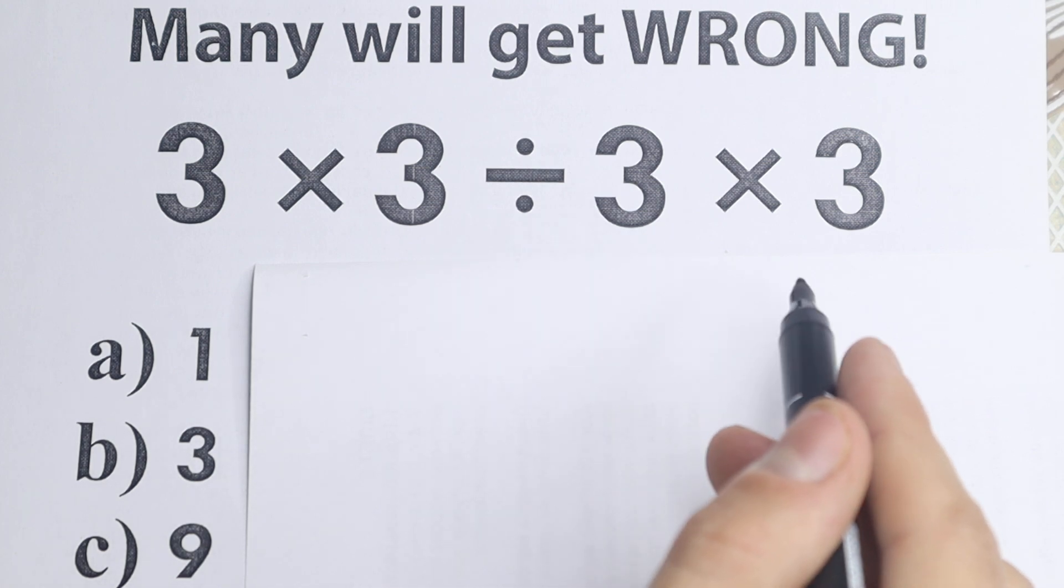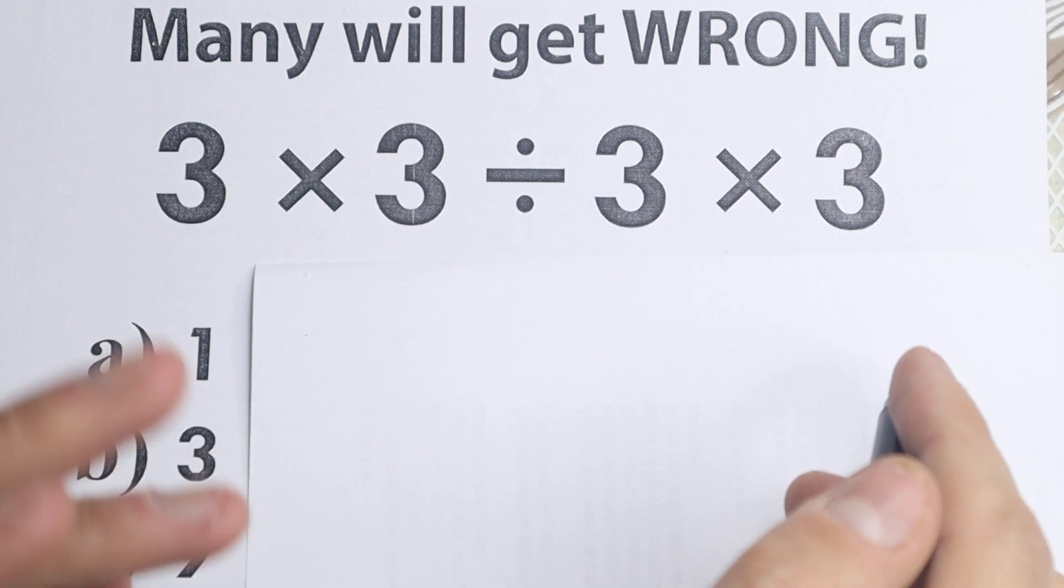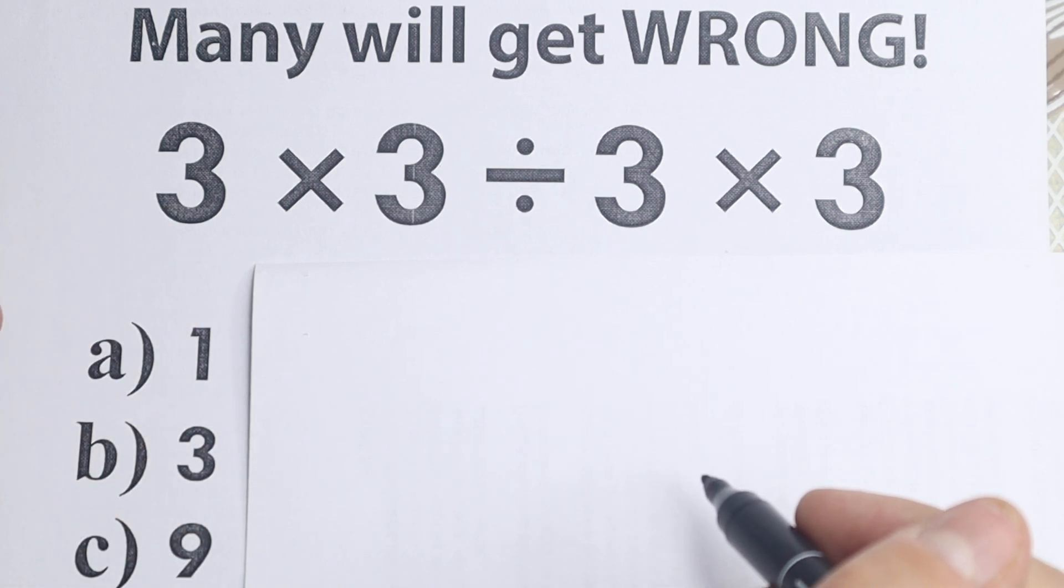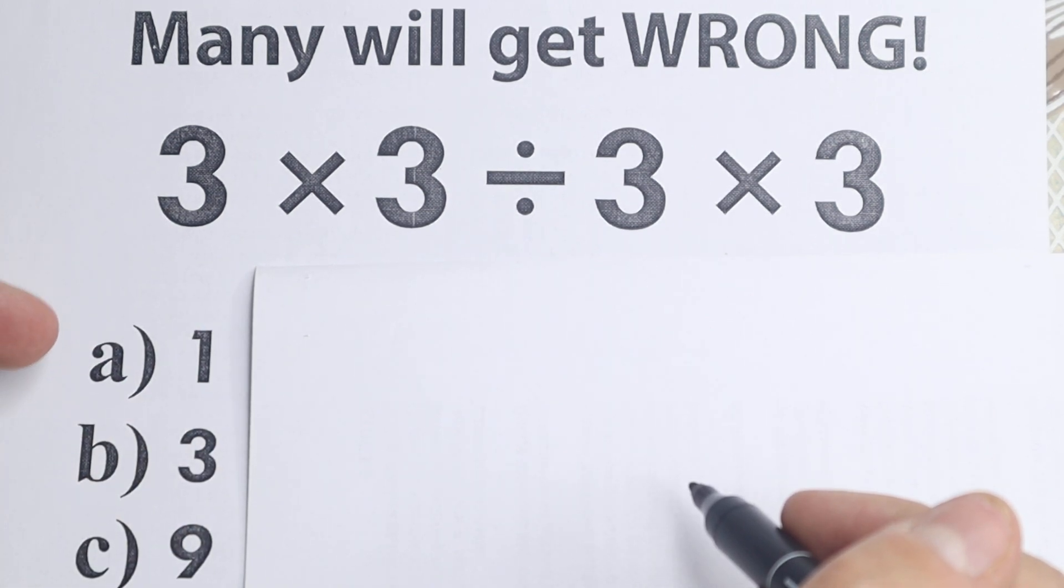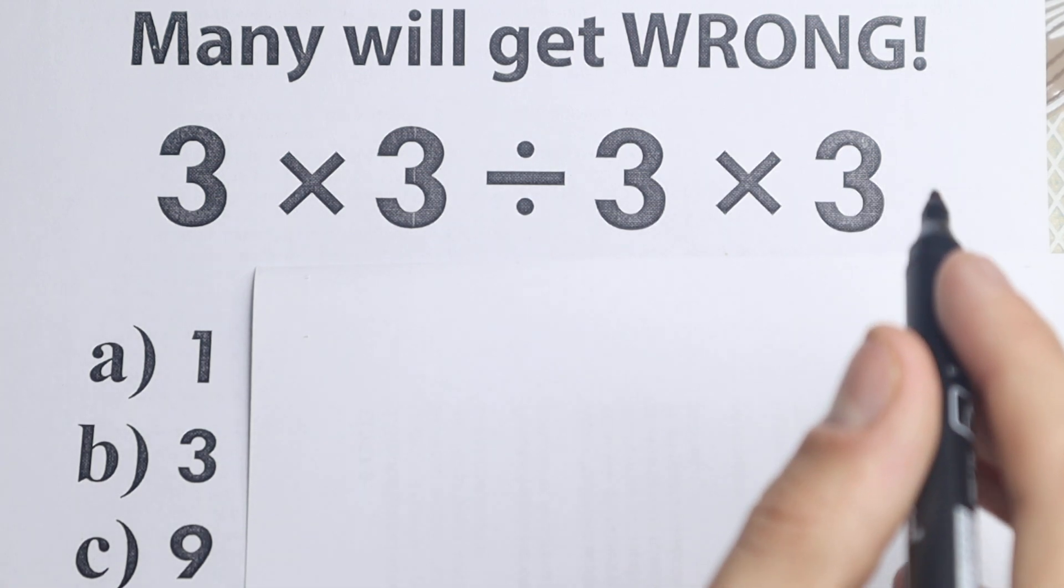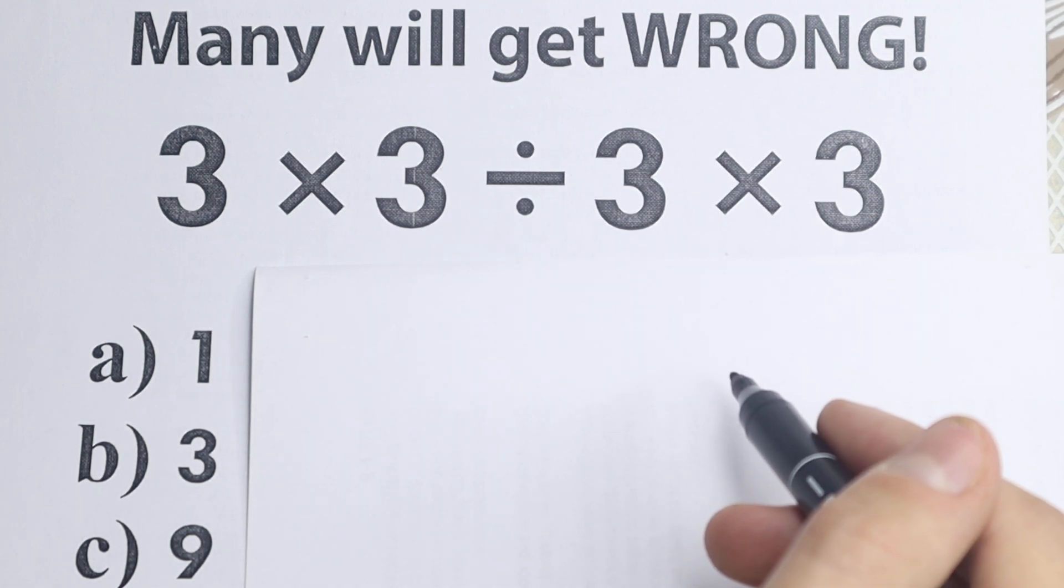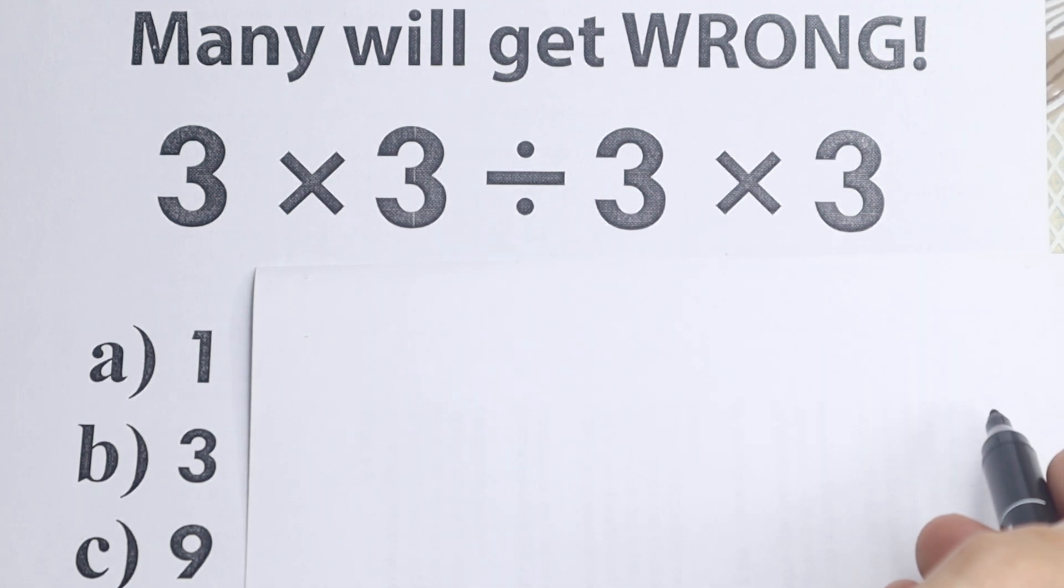We have 3 times 3 divided by 3 and times 3. I don't want you to use your calculator right here. I want to suggest you go ahead and write your answer down in the comment section: 1, 3, or 9. Right here we have three options, so try to solve it by yourself and we will check our answer in the end of the video. Because obviously whatever order we select is going to create a different answer, right? So we need to understand what is the correct order.